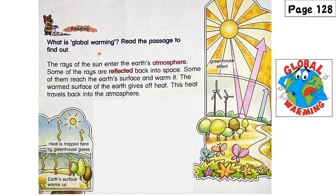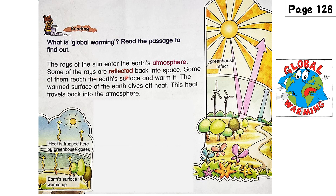What is global warming? Read the passage to find out. The rays of the sun enter the earth's atmosphere. Some of the rays are reflected back into space. Some of them reach the earth's surface and warm it.